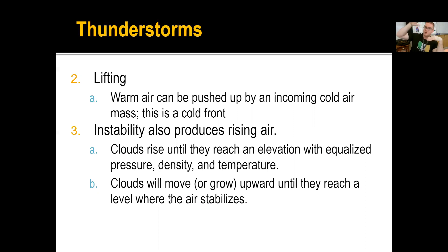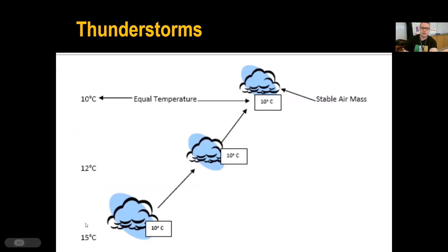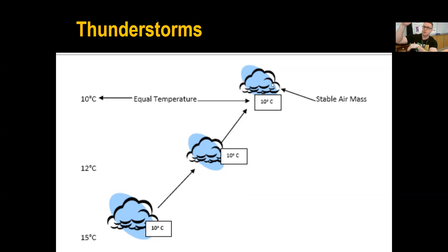Clouds will continue to grow upward until the air stabilizes out. If you have a lot of instability in your atmosphere, you might hear the meteorologist say there's a high amount of instability — it means there is a really large column of air that the cloud can use to grow until it hits that stable point at the very top. For example, if the temperature in the cloud is 10 degrees Celsius but the surrounding atmosphere is 15 degrees, that cloud will continue to rise until temperatures equalize. That's how we get those really tall anvil cumulonimbus clouds — if the column of air is very different from the cloud temperature, they can get very, very big.